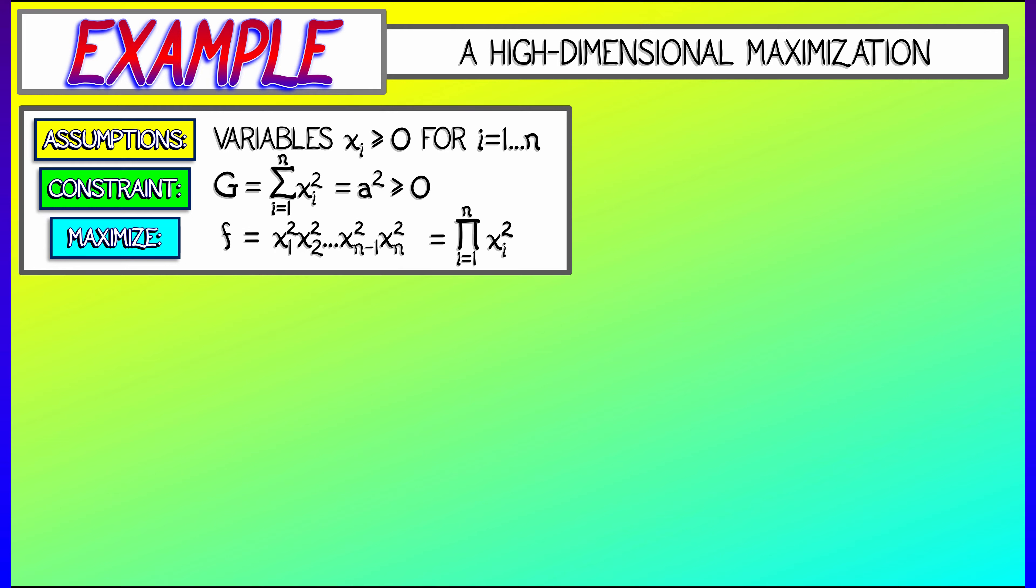Okay, what we want to do is maximize the product of the squares of the variables. So x1 squared times x2 squared times yada yada yada, all the way up through xn squared.